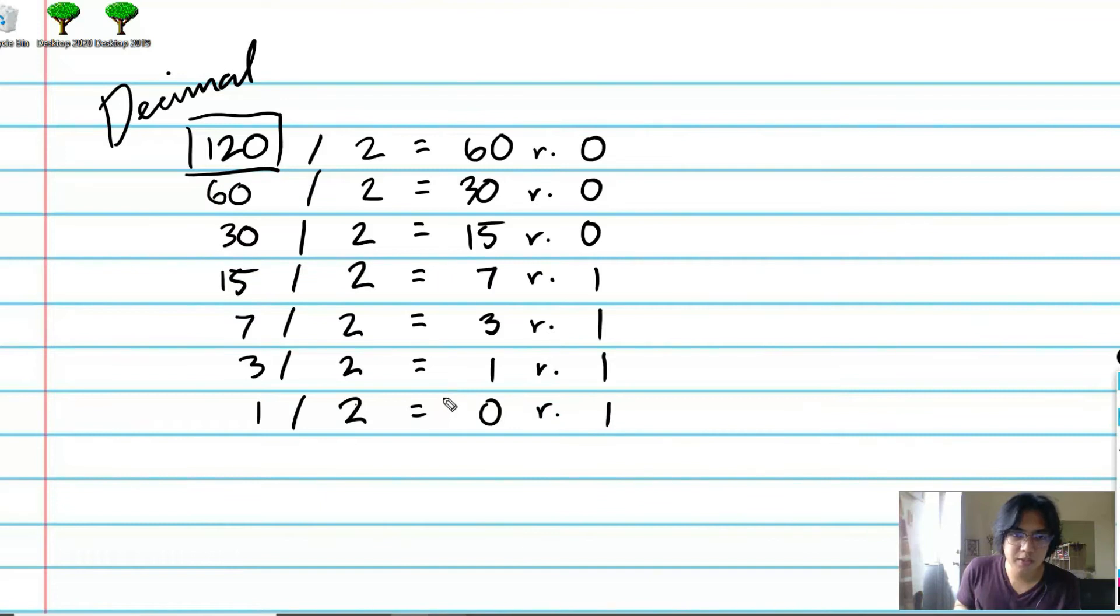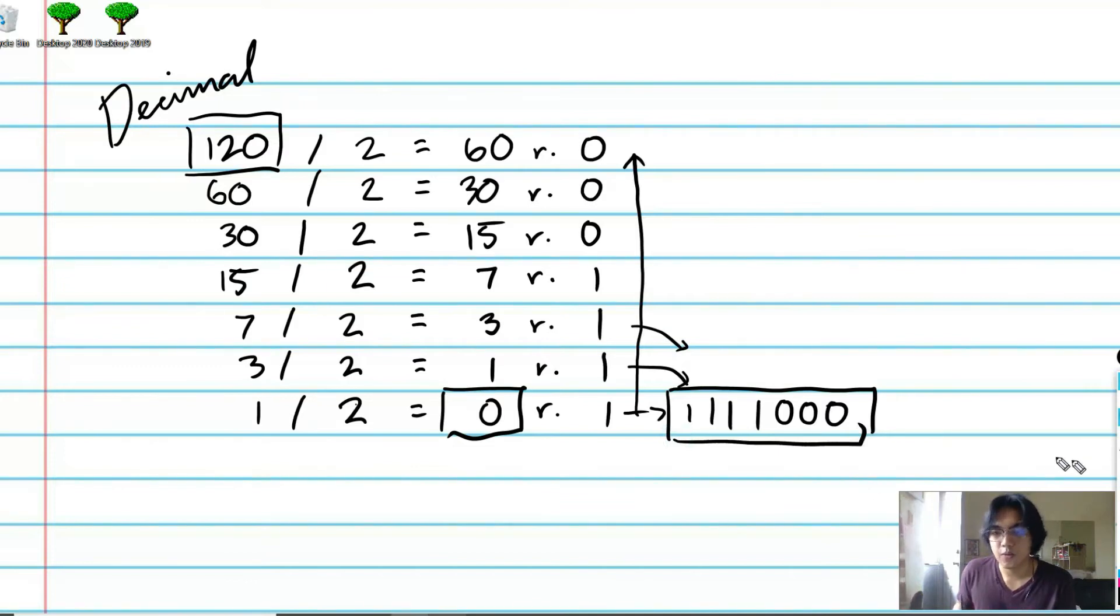Once we are able to reach 0, that's the time that we stop, and we just read these numbers in the reverse order that we got them. So we have the binary representation 1, 1, 1, 1, 0, 0, 0. This is now the binary representation of 120.